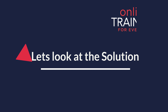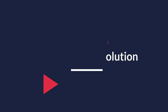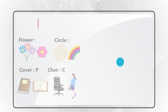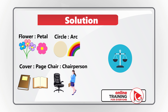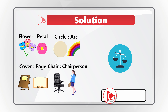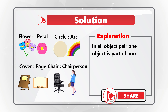I am moving forward to share my version. The key here is to determine the relationship between the objects. In all object pairs, one object is part of another.